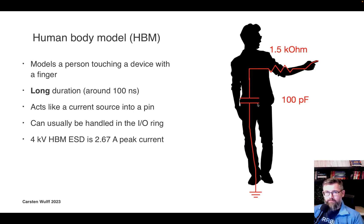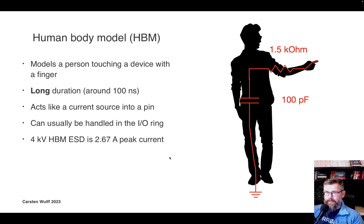That zap maybe can be — if it's an air gap zap — maybe a one centimeter gap, and then we're talking kilovolts for the air to ionize and break down. These type of pulses act like a current source that gets pushed into a pin. The duration is relatively long in a sense — around 100 nanoseconds — it'll start out fast and then slow down. This we can usually handle in the input-output parts of the chip. Depending on what level of ESD protection you want — maybe 1 kV or 2 kV HBM — but for 4 kV HBM it's actually equivalent to about 2.67 amps getting pushed into your chip, which is usually quite a lot higher than the normal operating current.